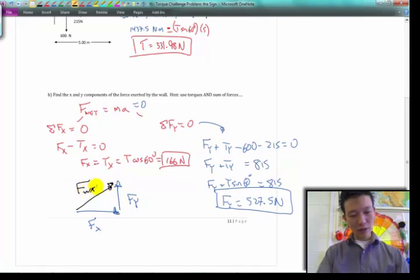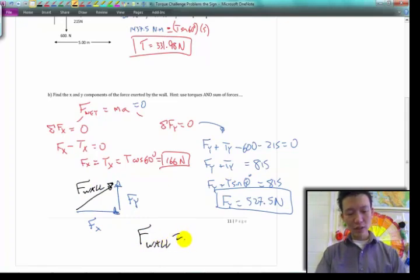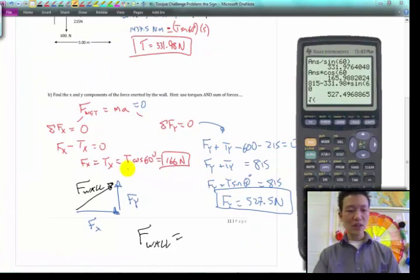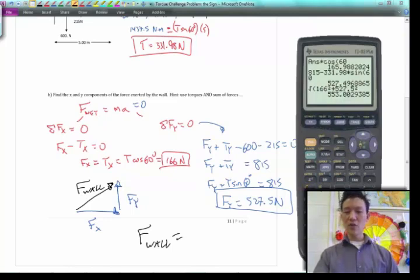This is the force of the wall. I can just say a squared plus b squared equals what? C squared, right? So, all I got to do is take the square root. Let's find the total force. Let's just finish this off, right? Of 166 squared plus 527.5 squared, and I get a total force of 553 newtons there.